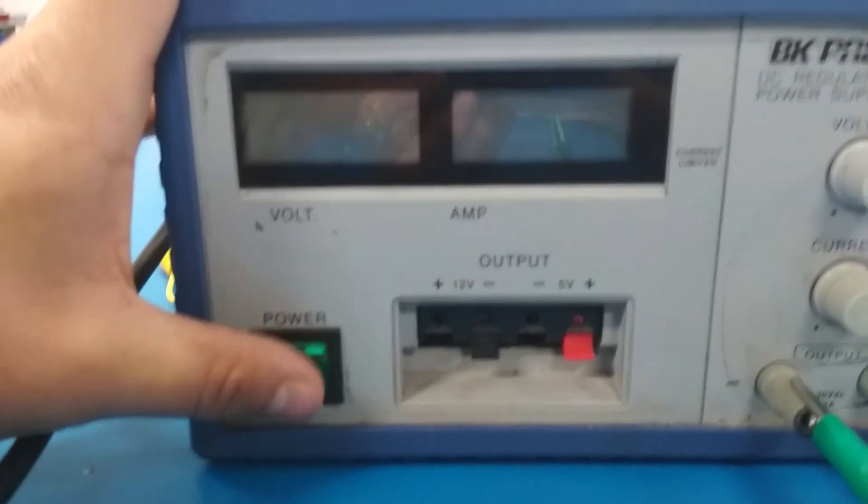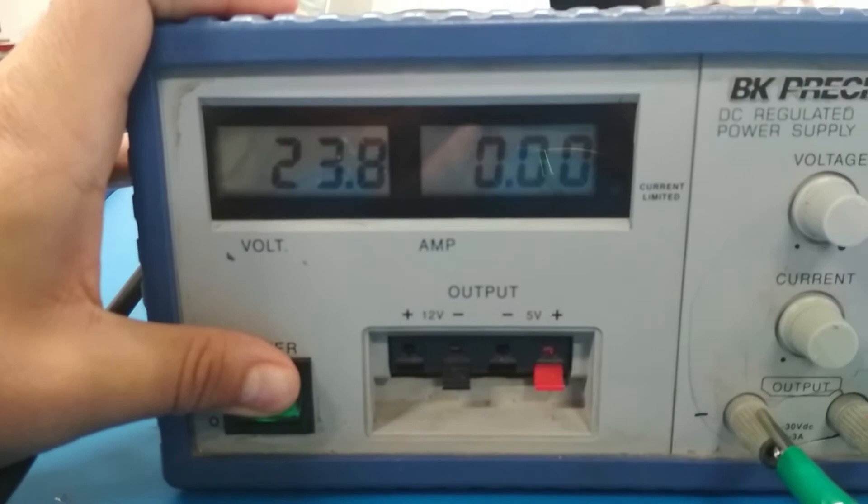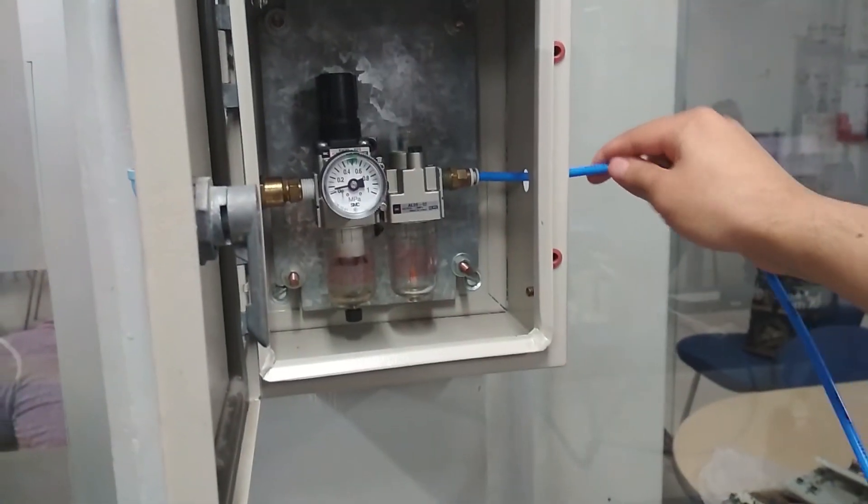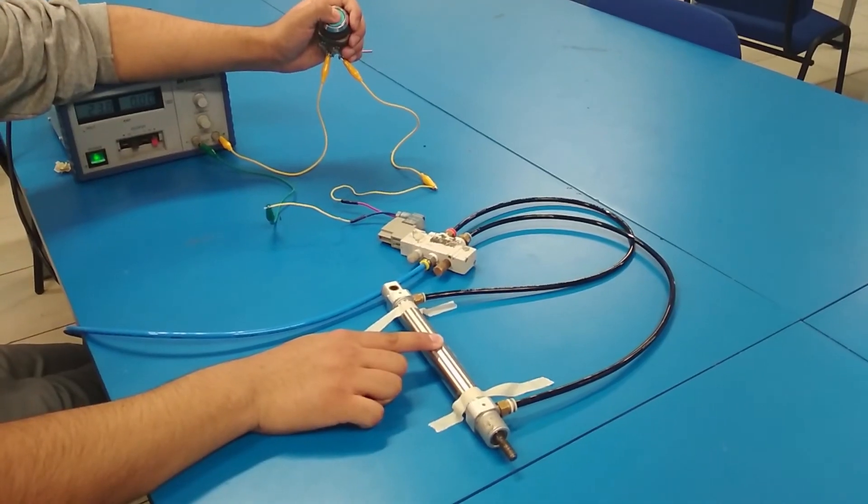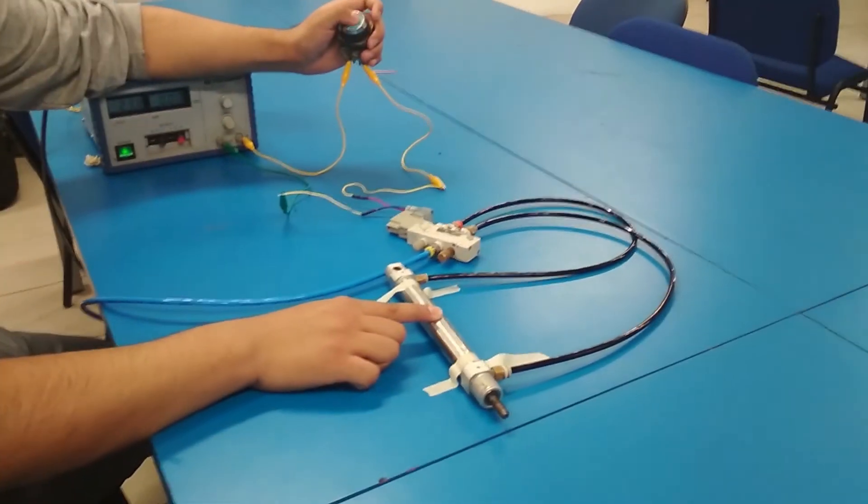Now ready, the connection. We turn on the source to 24V. Connect the hoses. We open the air under pressure and with the hub on the valve we press the power.